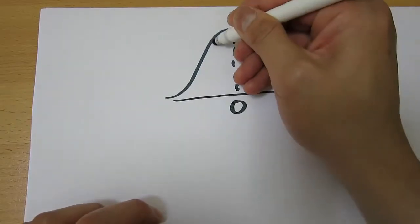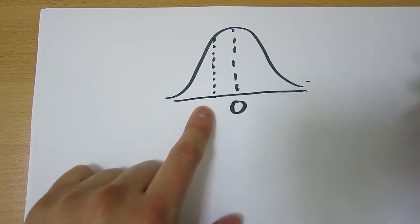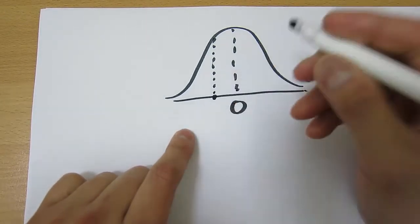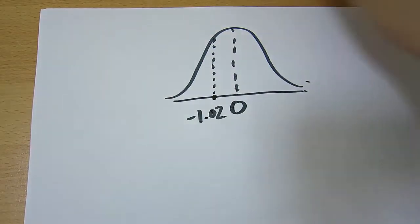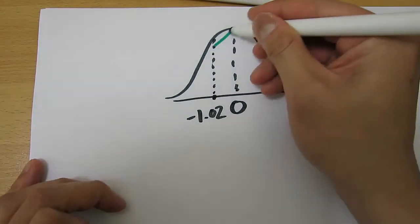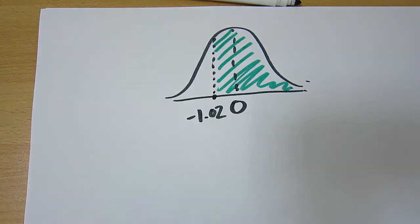We now know that that probability we're after on the standard normal distribution table, that proportion we're after is negative 1.02. And similarly, that area we're after is this here. So now we can use our standard Z table.